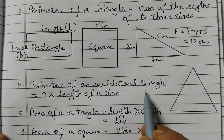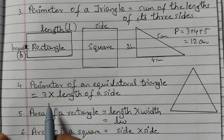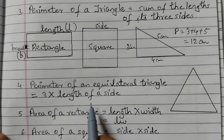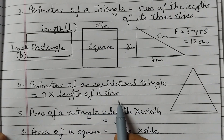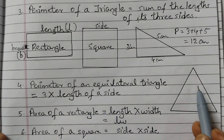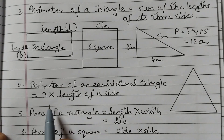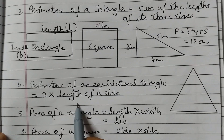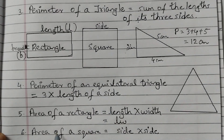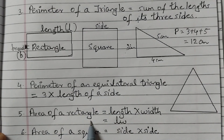The perimeter of an equilateral triangle is equal to 3 into the length of a side, because an equilateral triangle has all 3 sides equal. So the formula is 3 × side.